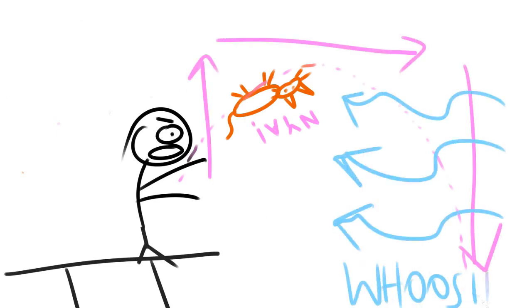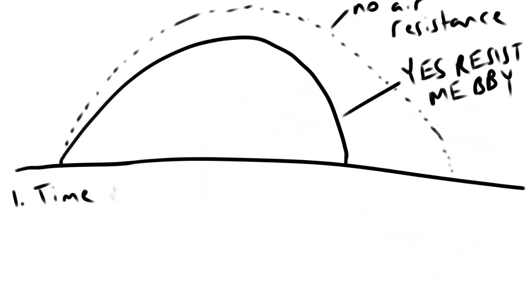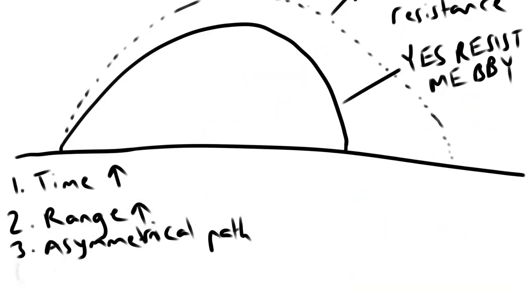The foundations of projectile motion are simple: you throw something up and across and it falls down. In the real world, air resistance will act on the projectile, causing five changes: time of travel increases, range increases, asymmetrical path, velocity of landing decreases, and height decreases.